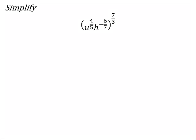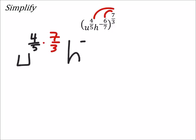All right, here we go again. So I'm going to distribute that 7 thirds. I'm going to multiply all the exponents. So I got u to the power of 4 fifths times 7 thirds. Then I've got h to the power of negative 6 sevenths times again that 7 thirds.